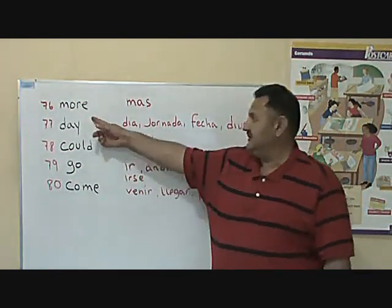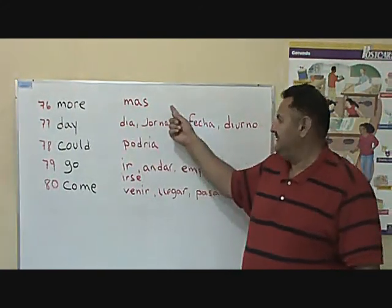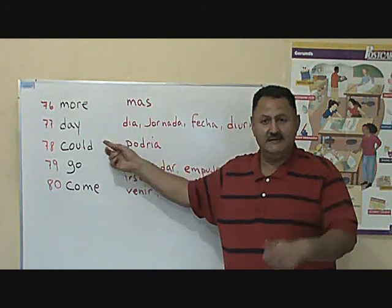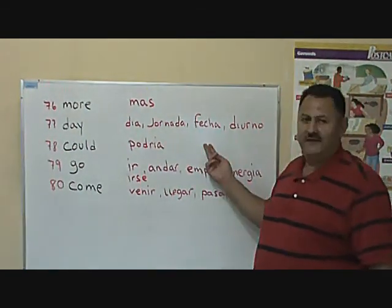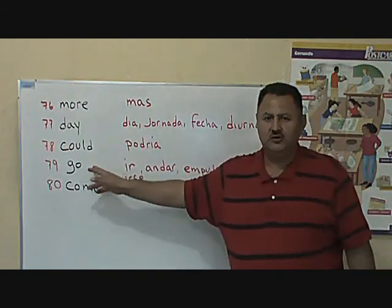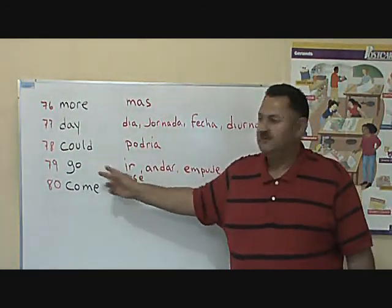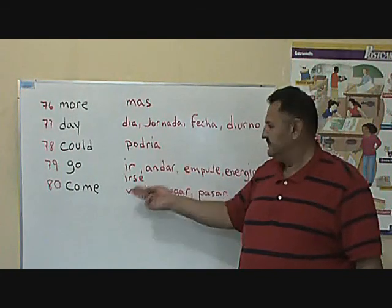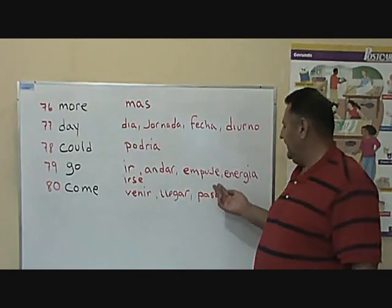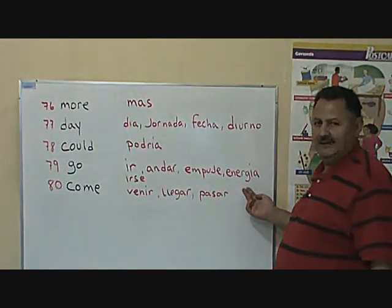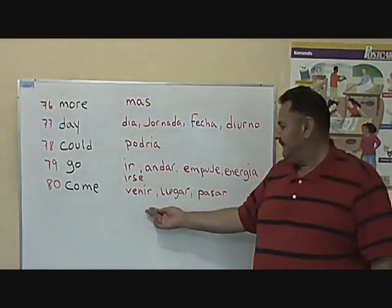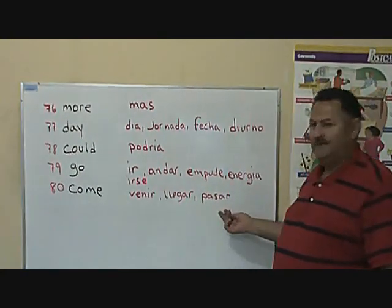For my Spanish students — more: es más. Day means various things: día, jornada, fecha, y diurno. Could is a modal: podría. Go also means various things: ir, andar, empuja, energía, irse. Come: venir, llega, pasar.